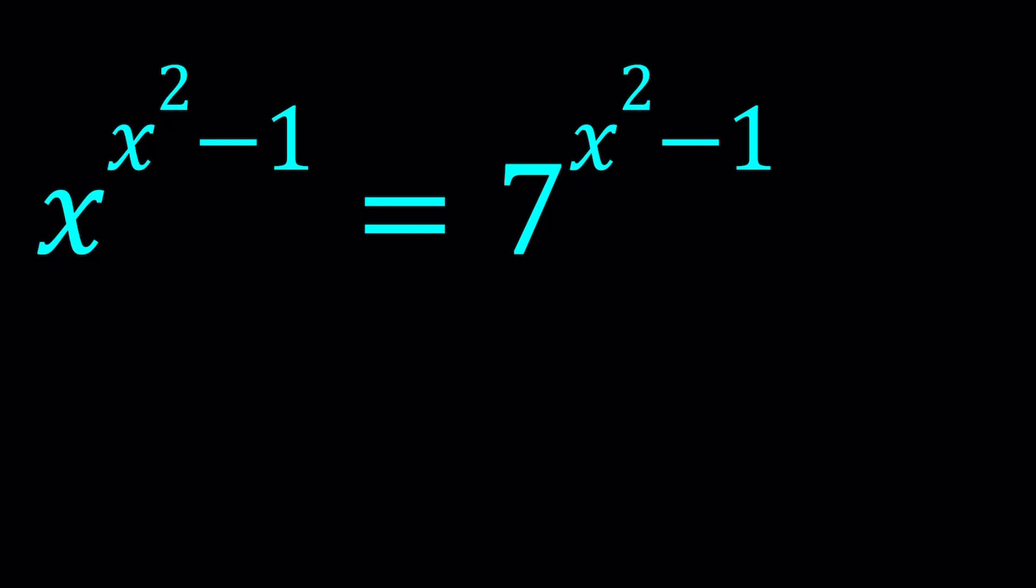Now, to be able to solve an equation like this, there's a couple different things you can do. For example, you could just log both sides. Let's go ahead and do it. So if we log both sides, we're going to get the following. Log, and this is base 10 by the way, when I don't write the base, x to the power x squared minus 1 equals log 7 to the power x squared minus 1.